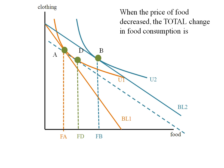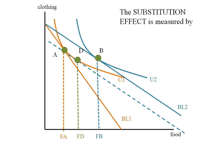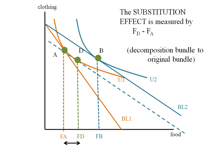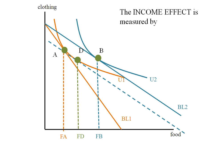Because of this price decrease, we have a change in the amount of food we consume. The total change is the difference between the food in my final bundle minus the quantity of food in my initial bundle — so FB minus FA. The substitution effect is the difference between my decomposition bundle and my original bundle: FD minus FA. The income effect is the difference between my final bundle and the decomposition bundle: FB minus FD.